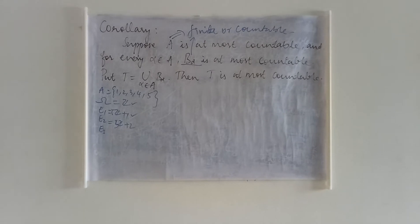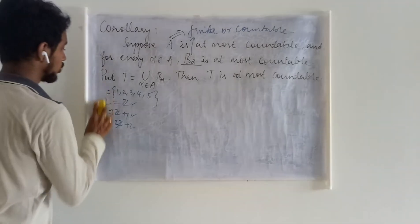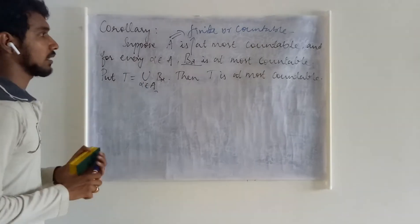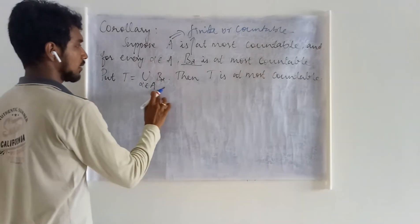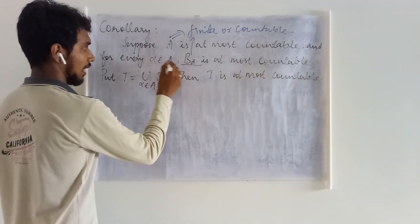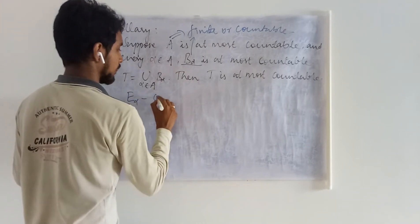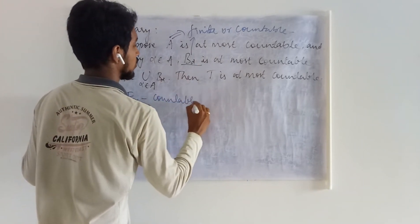Now we are just making the union of all these sets, and we have to prove that union is at most countable. If this is the case, we can consider for every alpha in A some countable set.